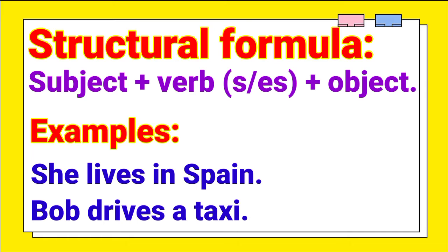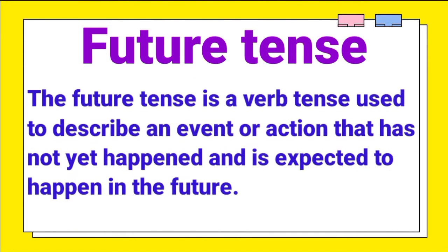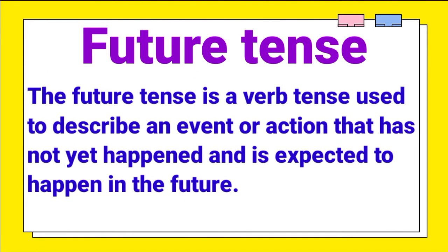Example: She lives in Spain. Or: Bob drives a taxi. Future tense. The future tense is a verb tense used to describe an event or action that has not yet happened and is expected to happen in the future.